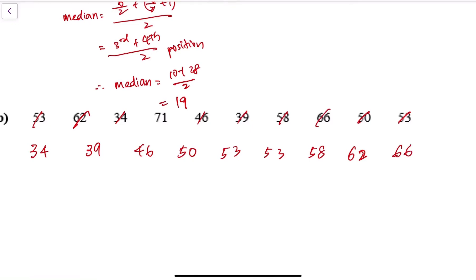So I have all these numbers here and there are ten of them, so my median number formula applies for an even count.